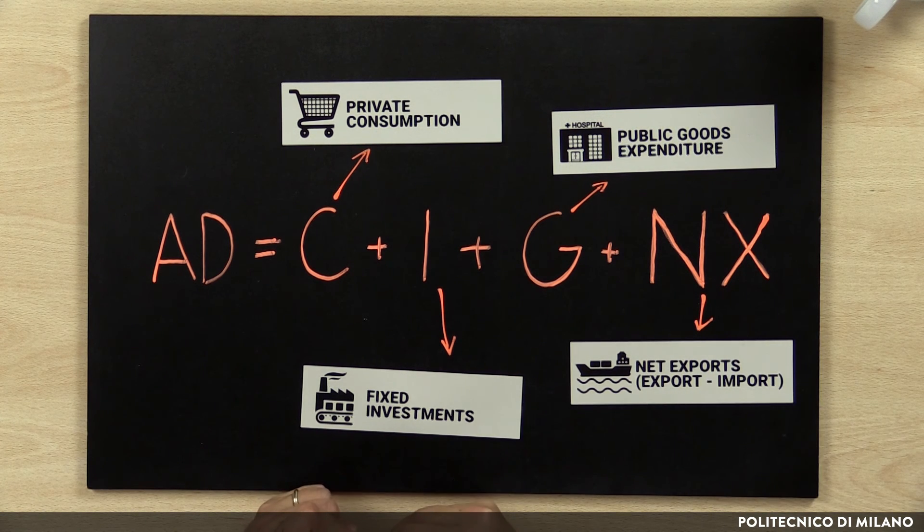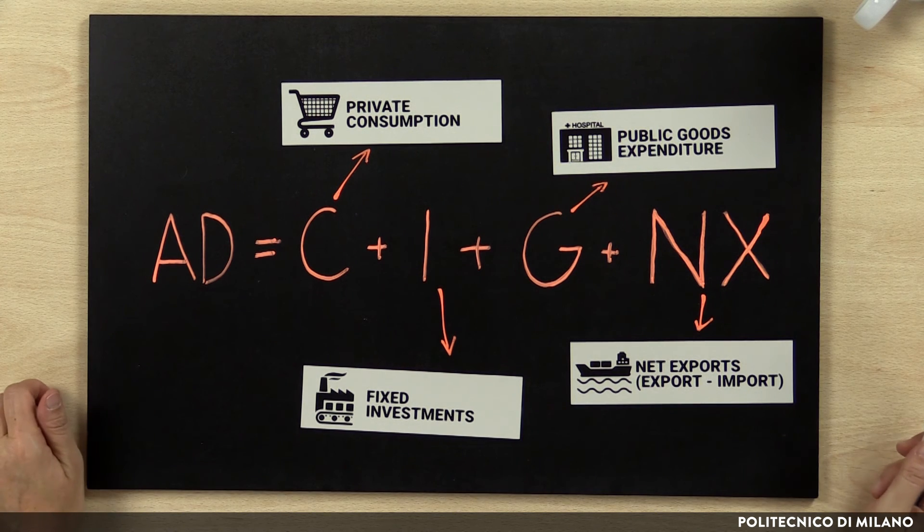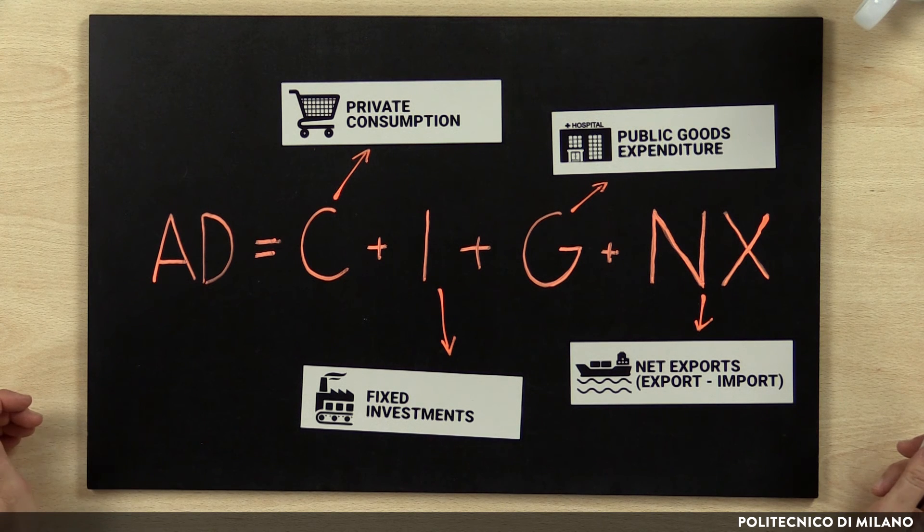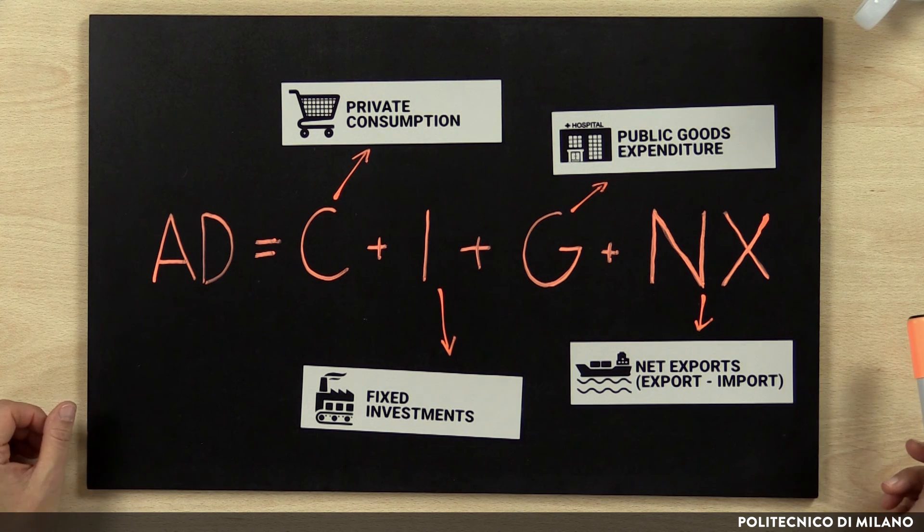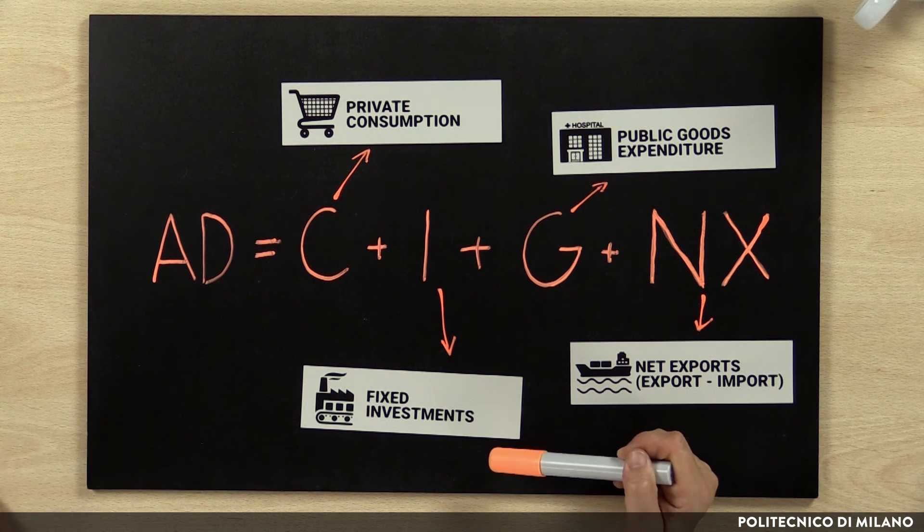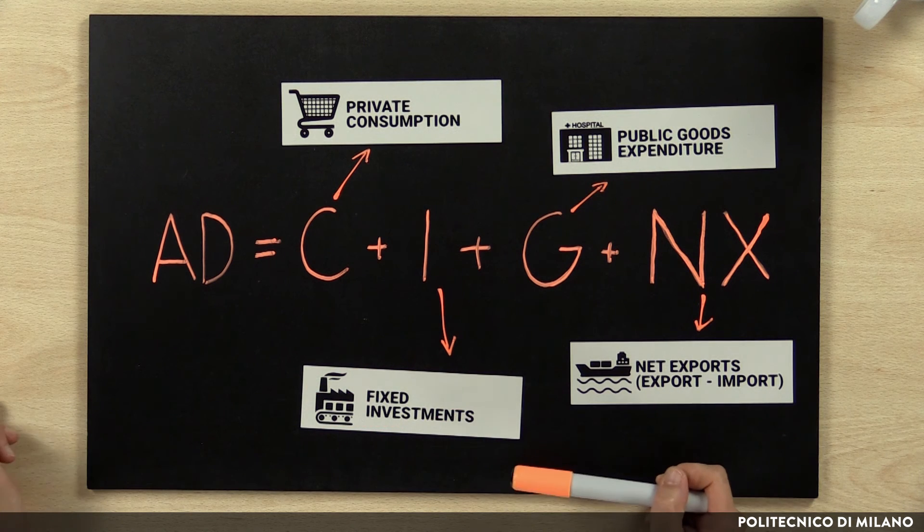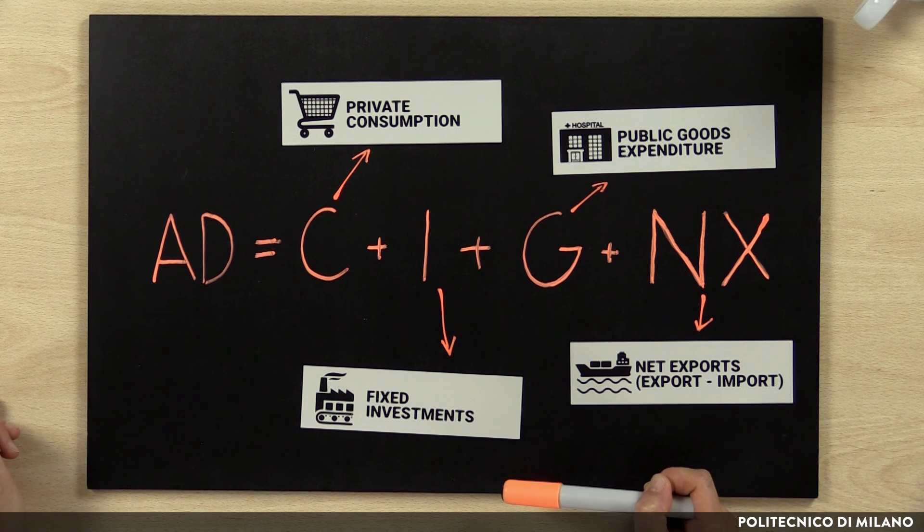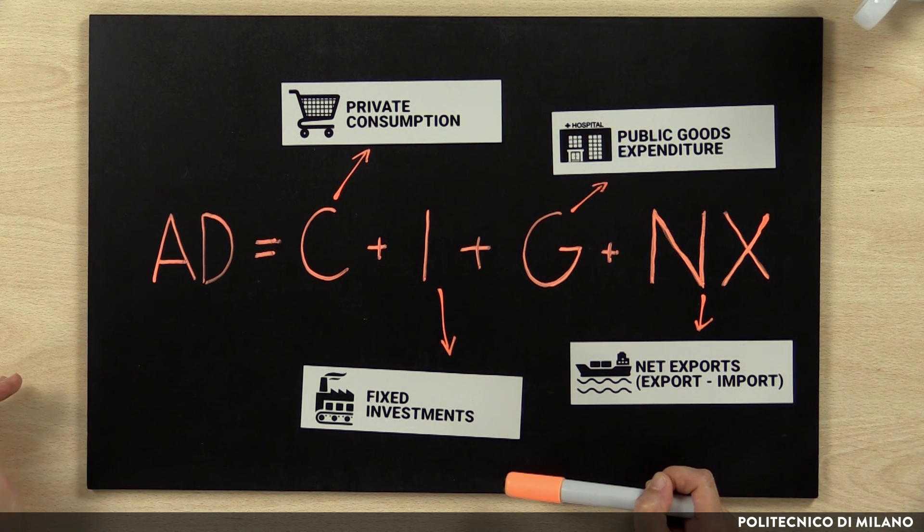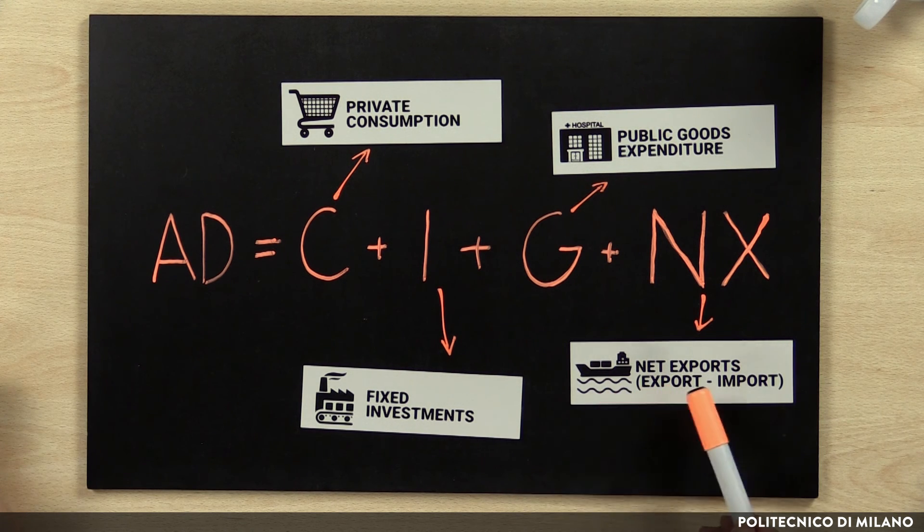In general, we assume that consumption will increase when available income increases, that is, when income net of taxes and including transfers increases. Firms' investment instead is assumed to depend negatively from the market interest rate, because when interest rates are lower it's cheaper to borrow to pay for the equipment that firms need. Public expenditures depend to a large extent on government choices, while net exports depend on the level of international economic activity and on the exchange rate activating transactions across countries.